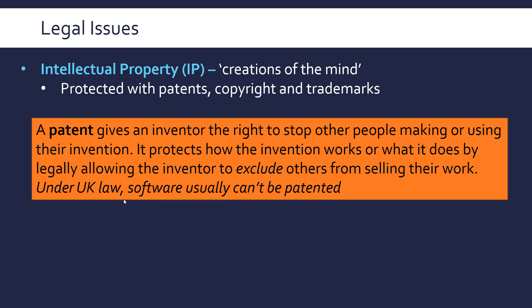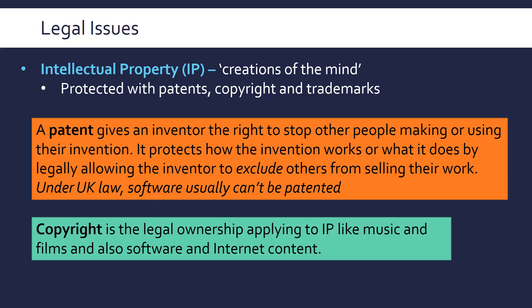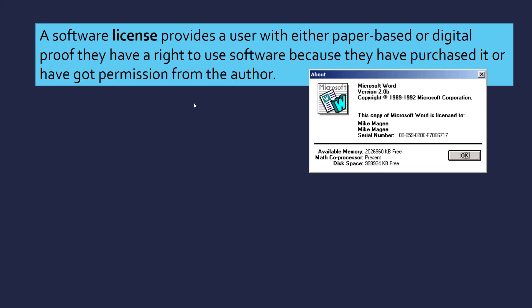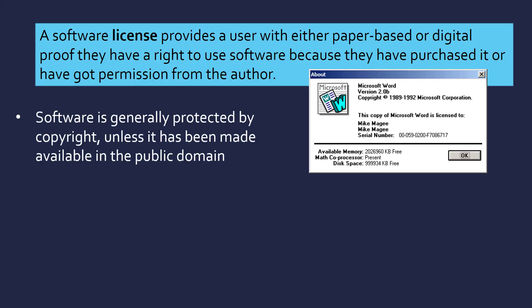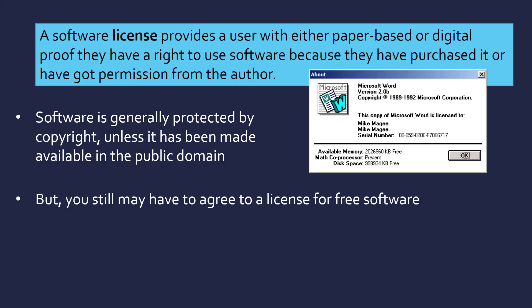Copyright is the legal ownership that applies to intellectual property. You don't have to apply for copyright — you just have it by being the author, whereas you have to actually get a patent from the government. Copyright is all about permission: if they don't give you permission to distribute a film, it's illegal to give it to someone else. Licensing is about proving you haven't stolen copyrighted software. A software license is either paper-based or digital and shows you have a right to use software because you've purchased it or got permission. Software is protected by copyright unless explicitly placed in the public domain, and even free software usually requires you to agree to terms and conditions.